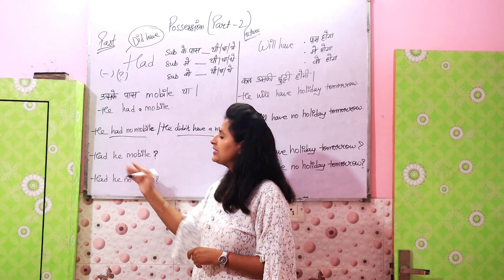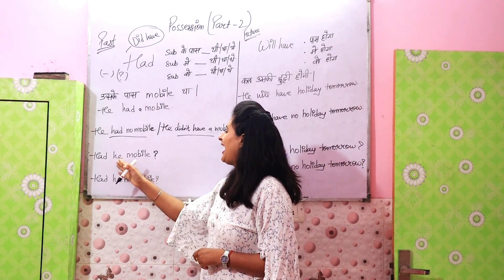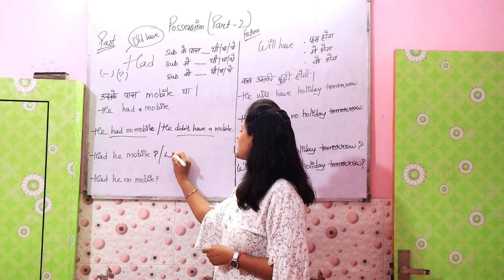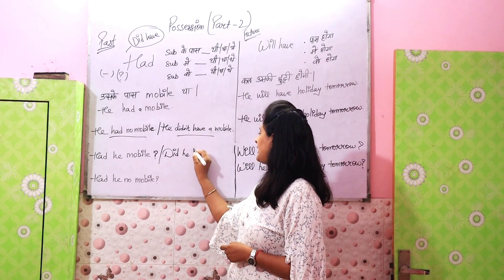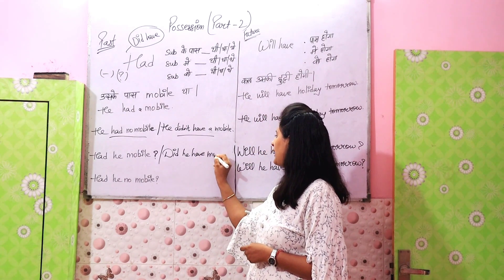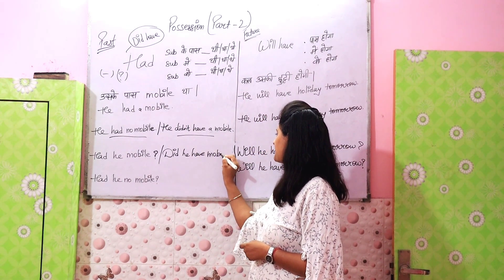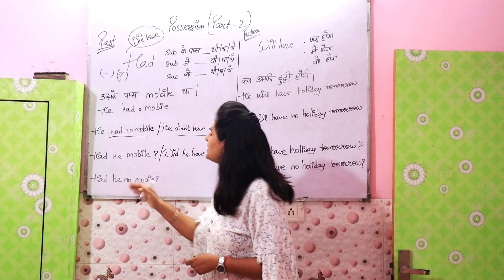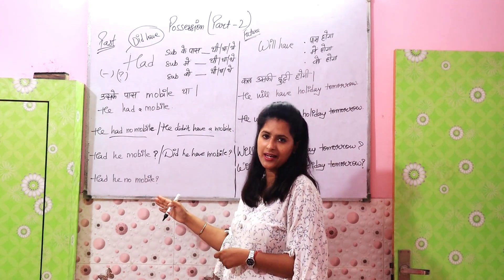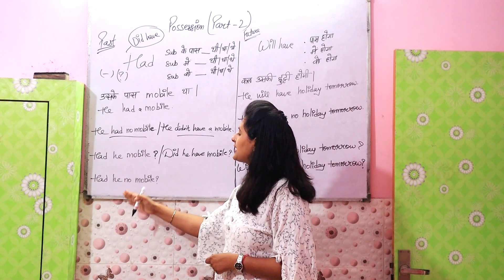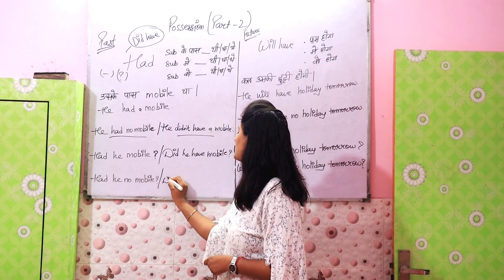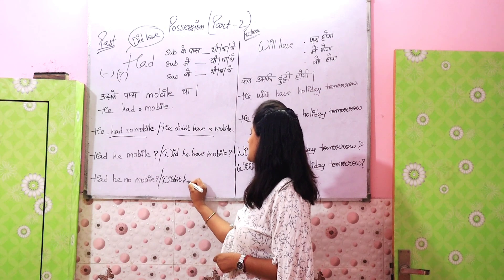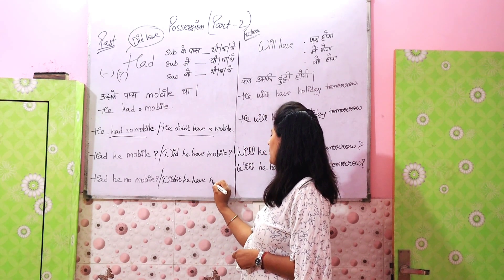Now coming to the question form. Kya uske paas mobile tha? We can say 'Had he mobile?' or 'Did he have mobile?' For the negative interrogative — kya uske paas mobile nahi tha? — we can say 'Had he no mobile?' or 'Didn't he have mobile?'